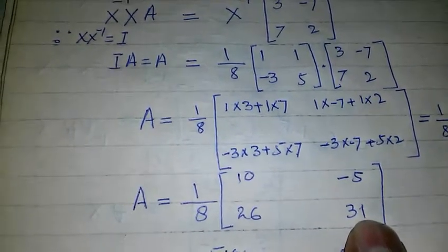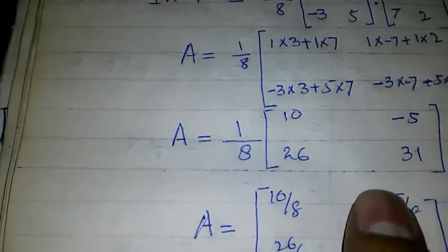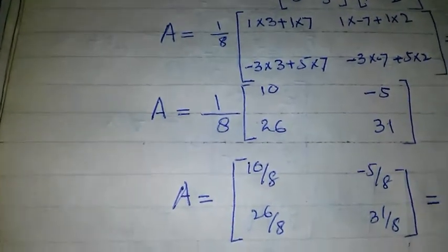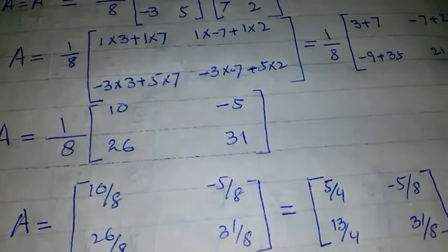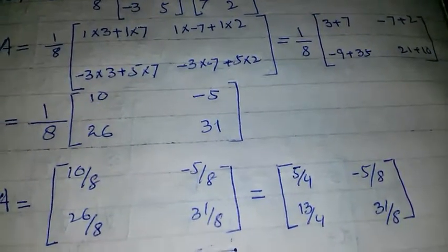Dividing each element by 8, we get [10/8, -5/8; 26/8, 31/8], which on further simplifying gives [5/4, -5/8; 13/4, 31/8].